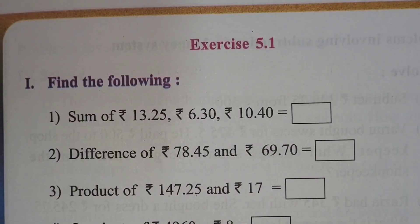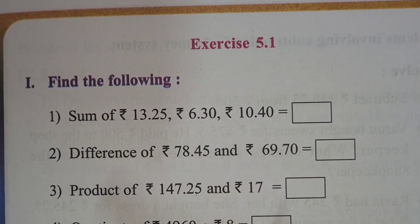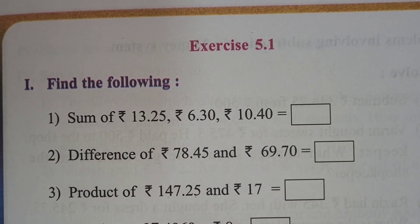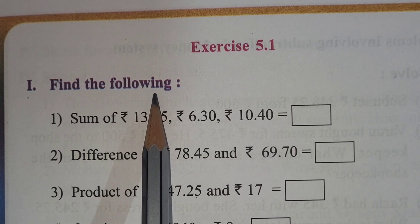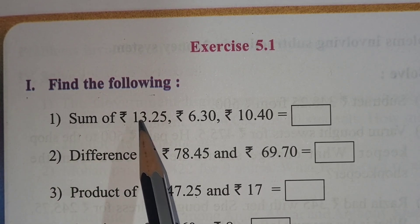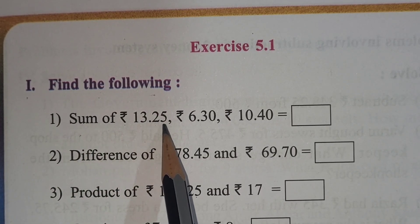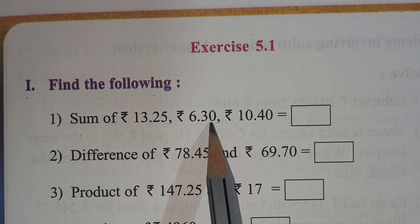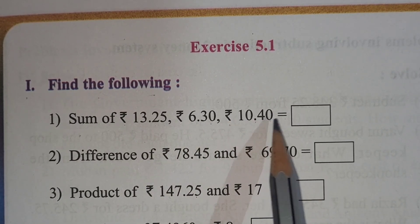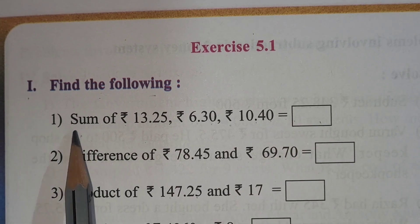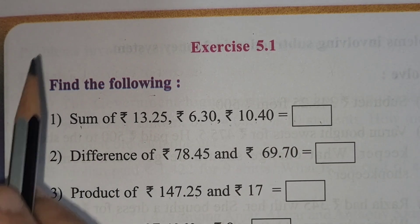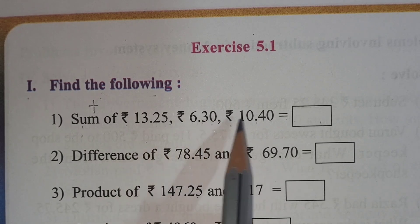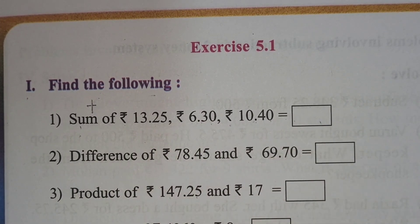We will solve the exercise part and work through many examples. So let's start. The first example: find the sum of rupees 13.25, rupees 6.30, and rupees 10.40. Sum means addition, so you have to add all these rupees.